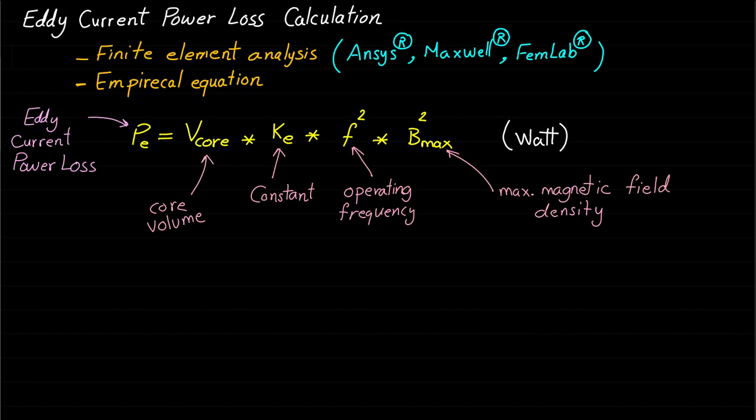Assuming the core volume is constant, it is very clear that the eddy current loss is depending on the square of the operating frequency and the square of the maximum magnetic field density. Just to add here that this empirical law is developed by performing too many tests and experiments. Basically, these experiments are performed by changing the input of the magnetic circuit which are current and frequency.